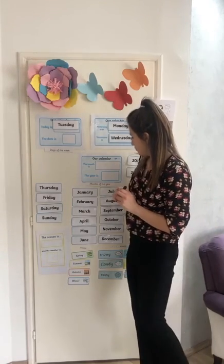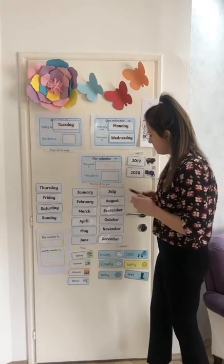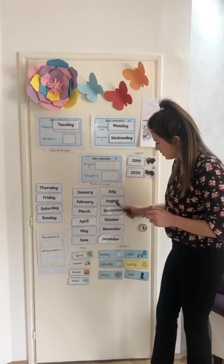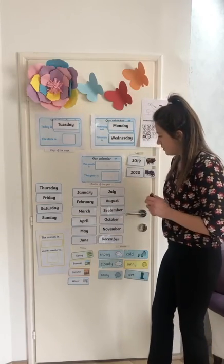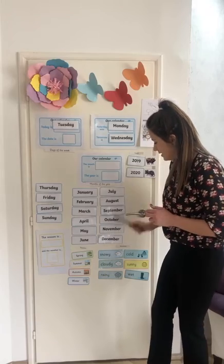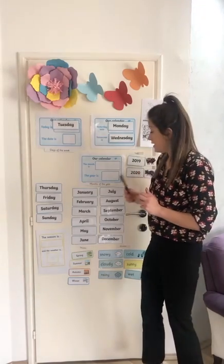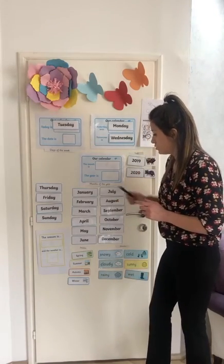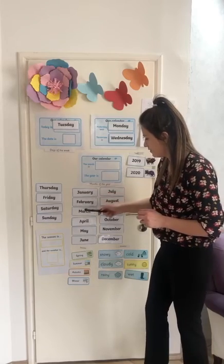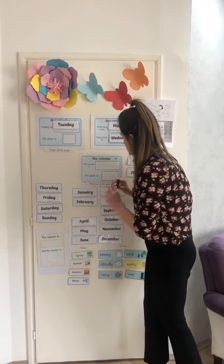Now it's time to do the months of the year. So, we have 12 months of the year. The first one is January, the last one is December. We know it's the third month of the year — first, second, third.